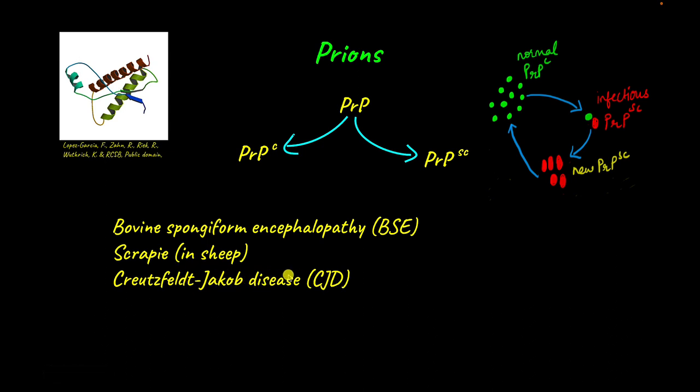Prion diseases are progressively worsening diseases. Once the symptoms appear, they just get worse and worse, and as of yet there is no known cure for prion diseases — and they are all fatal. All prion diseases lead to death.